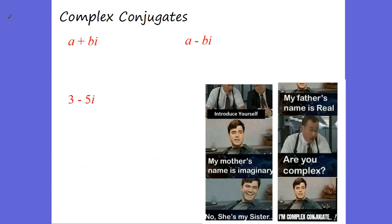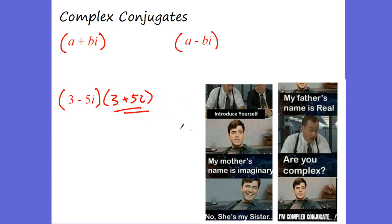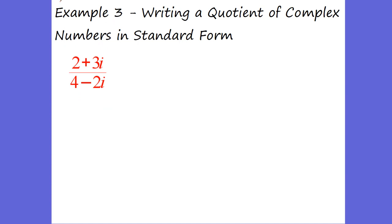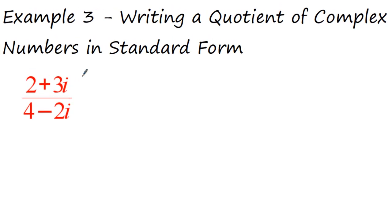We also have a thing called complex conjugates. You're going to want to know how to do multiplying by the conjugate — we're going to be using this all year long. So this is called a complex conjugate: we have a plus bi, so its conjugate would be a minus bi. Which means 3 minus 5i — 3 plus 5i would be its complex conjugate. Anytime we have a complex number on your denominator, you can't leave complex numbers there. So you have to multiply by its complex conjugate on the top and the bottom, and I'll show you why.